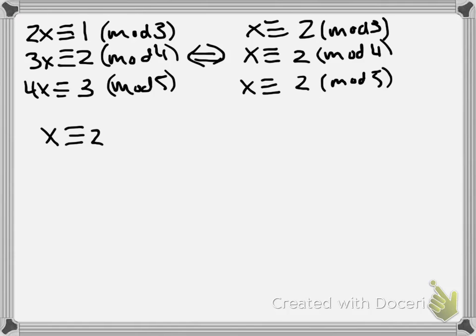Really, that says that we have to just have x congruent to 2 mod the least common multiple of 3, 4, and 5, or x congruent to 2 mod 60. And so you could check, x being 62 is another thing that works out in here.